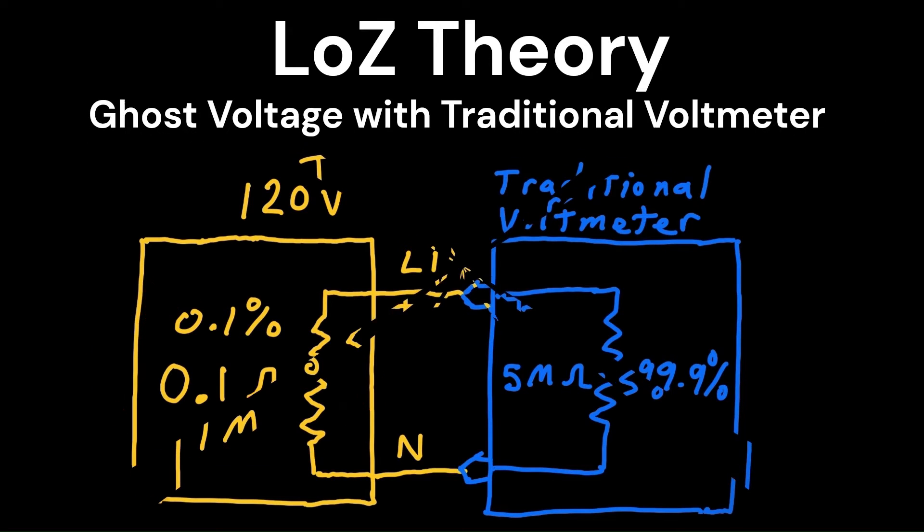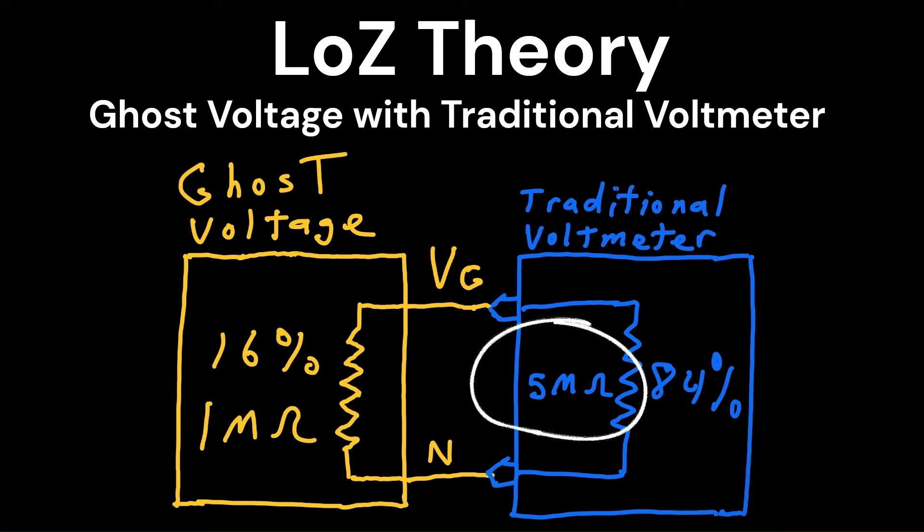So when measuring ghost voltages, your meter, having greater than a 5 million ohm input resistance, may still read most or all of the original voltage source, making you think that what you have is a solid voltage.